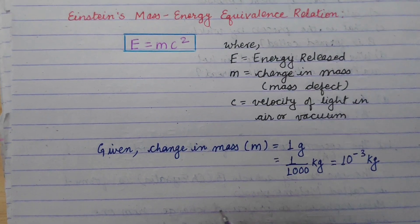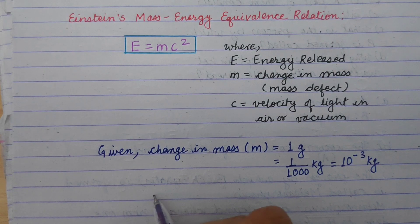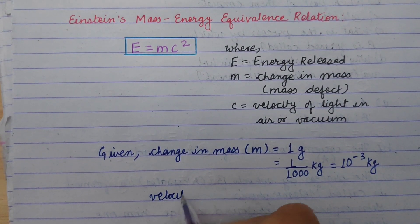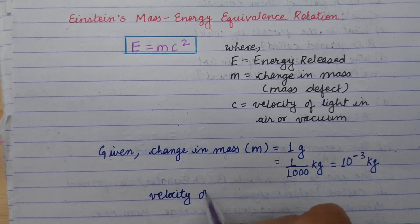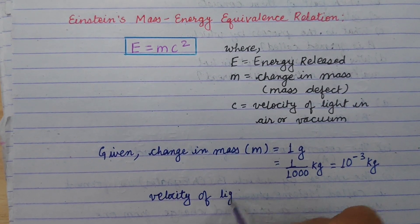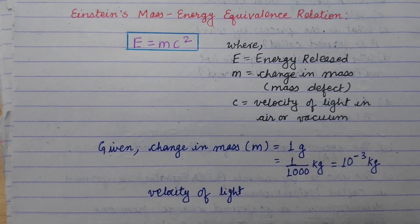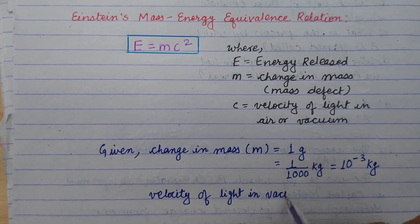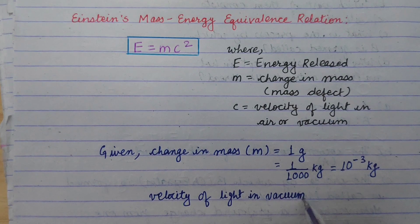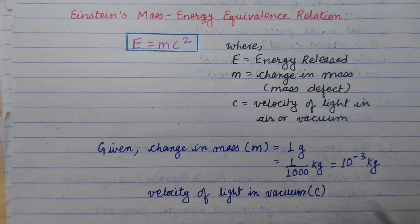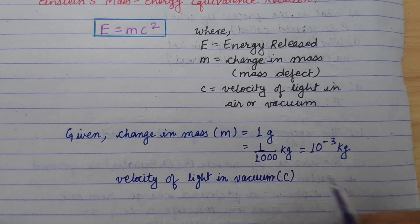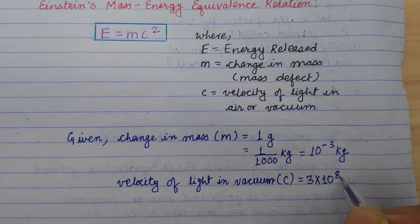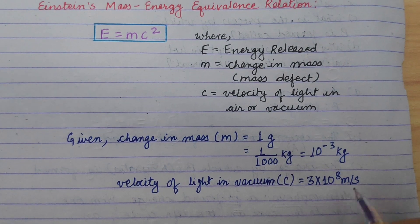Given: velocity of light in vacuum. This is the standard value: 3 into 10 to the power of 8 meters per second.